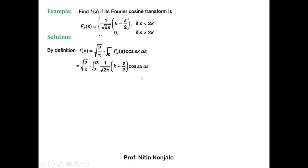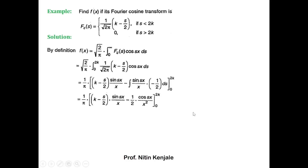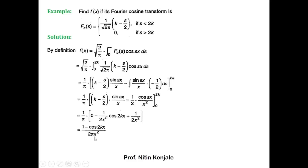Since 1/√(2π) is constant it can be taken out. Using integration by parts, the integrand gives u × (sin(sx)/x) minus the integral of (sin(sx)/x) × (−1/2) ds over the limit 0 to 2k. Integrating sin(sx)/x gives −cos(sx)/x². After substituting the limits and simplifying, f(x) = (1 − cos(2kx)) / (2πx²). This is the inverse Fourier cosine transform of f(x).